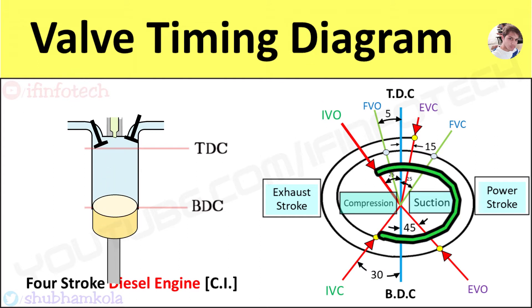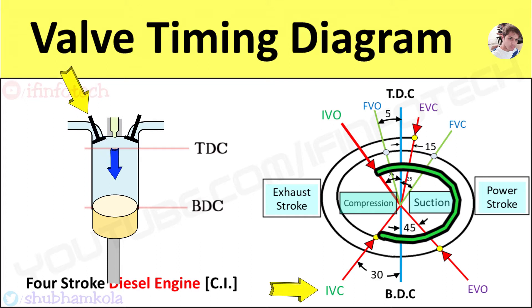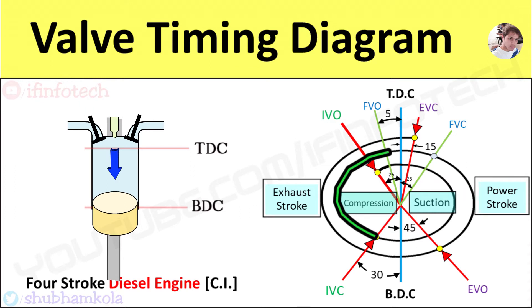During the suction stroke, pressure inside the cylinder will be atmospheric. When the piston moves from TDC to BDC, volume increases, creating a pressure difference inside the engine cylinder. Due to this pressure difference, fresh air enters the engine cylinder and fills it completely. The inlet valve closes at an angle of 30 degrees after the BDC position of the piston.